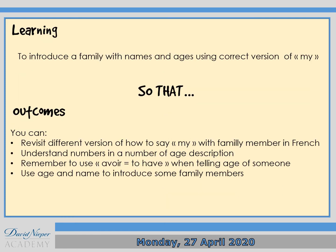So what we're going to do today: we're going to introduce a family with names and ages using the correct version of mon, ma, or mes. You can revisit different versions of how to say 'my' for family members in French. Understand numbers in the context of age descriptions. Remember to use avoir — meaning 'to have' in English — when you say someone's age in French: you don't use 'to be', you use 'to have'. And use age and name to introduce family members. This is the aim of today.